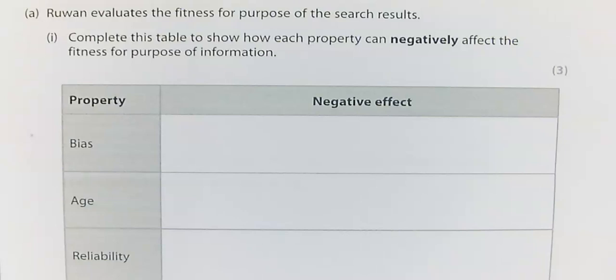We're up to 4A. Ruwan searched online for local sporting events. Ruwan evaluates the fitness for purpose of the search results. Complete this table to show how each property can negatively affect the fitness for purpose of information. I've got three marks, three properties: bias, age, and reliability, and I need to give a response for each.